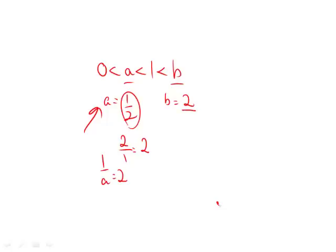Going back to b, which is two over one, we flip this over, so one over b equals one-half.